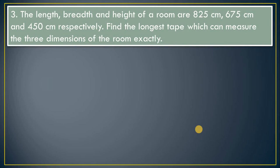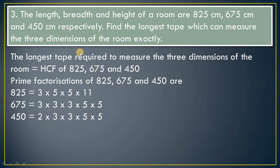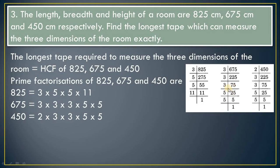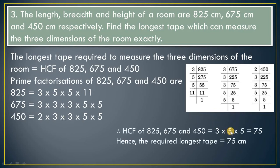Question 3: The length, breadth, and height of a room are given. Find the longest tape which can measure the three dimensions of the room exactly. The word 'longest' hints at HCF — 'highest' — and the tape size must be smaller than the room dimensions. So HCF should be used. Finding common prime factors — 3, 5, and 5 are common — the HCF is 75. Hence the required longest tape is 75 cm.